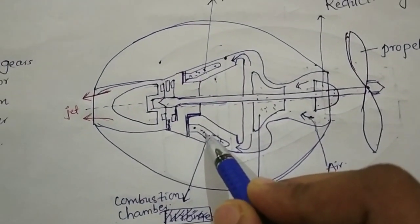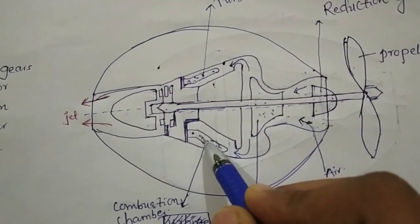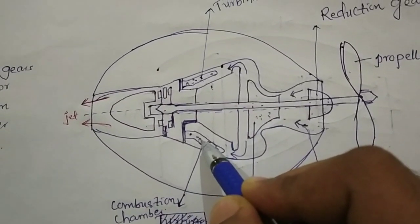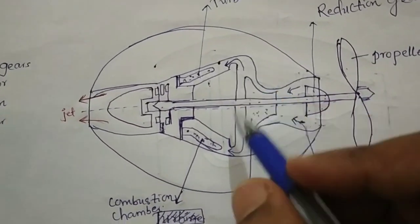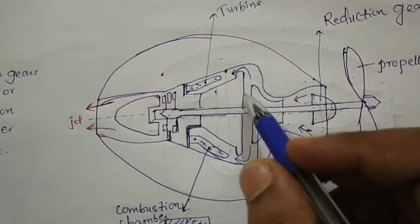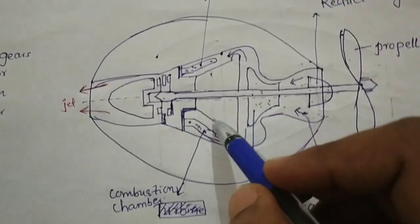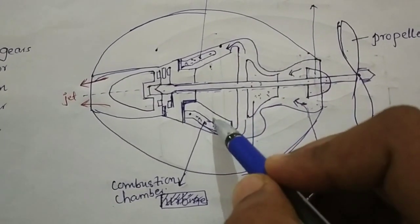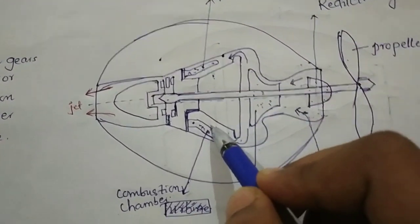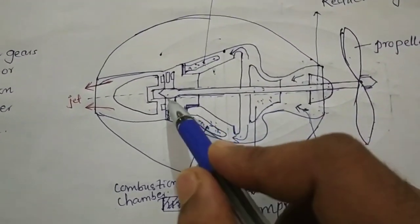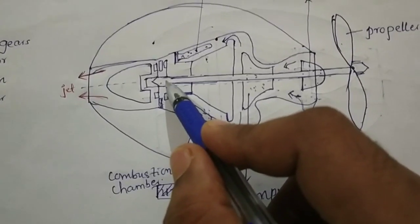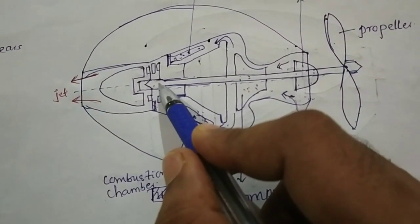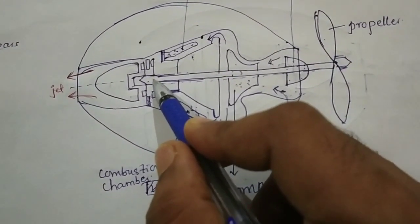In the combustion chamber, the fuel supply takes place. When the fuel is mixed with the high-pressure air from the compressor, combustion takes place. After combustion, the gases enter the turbine, where expansion takes place.